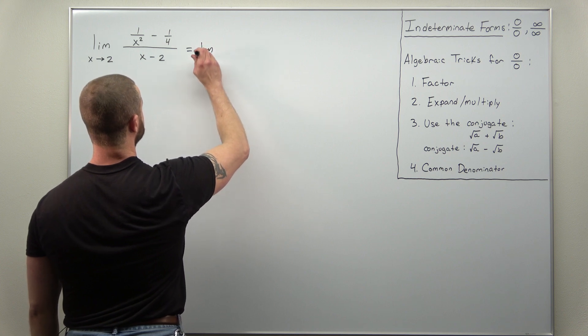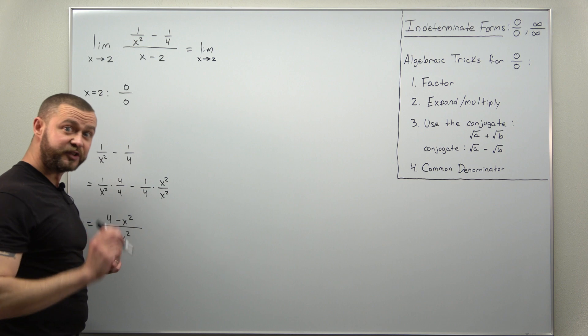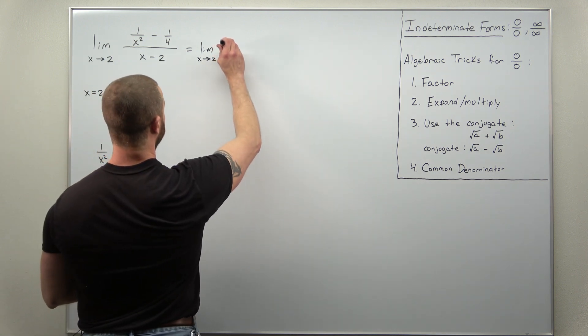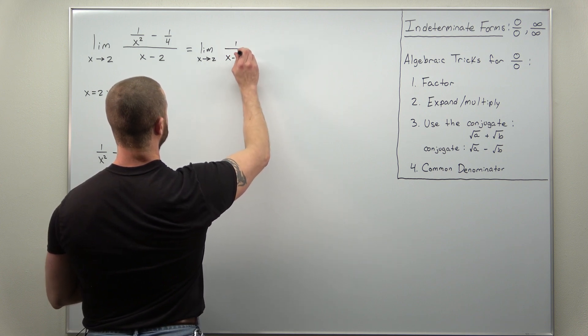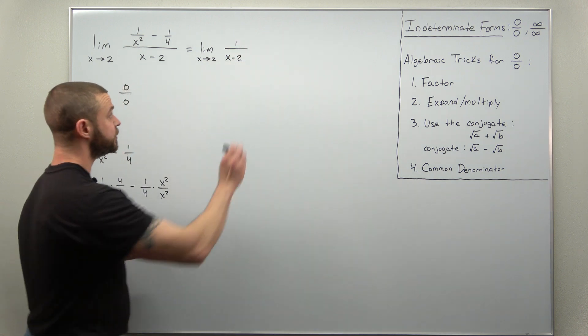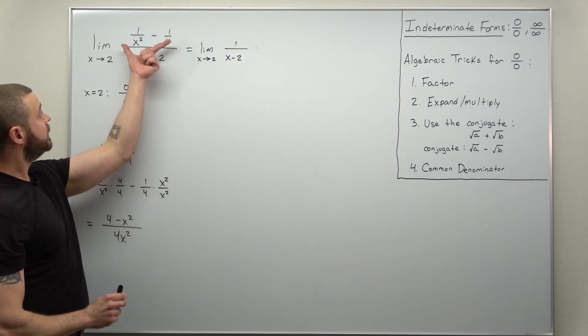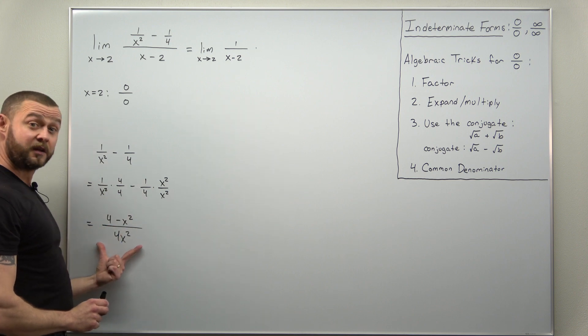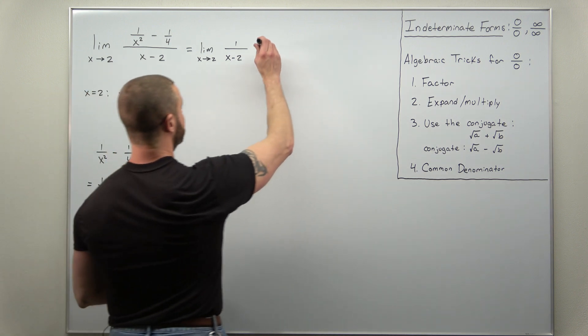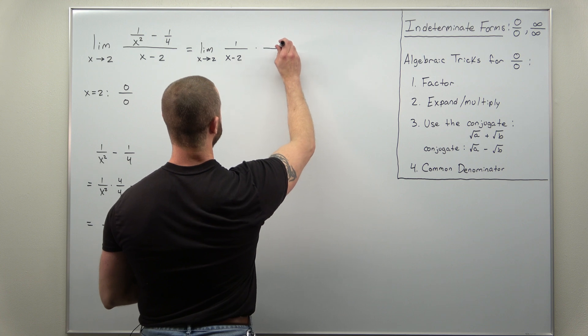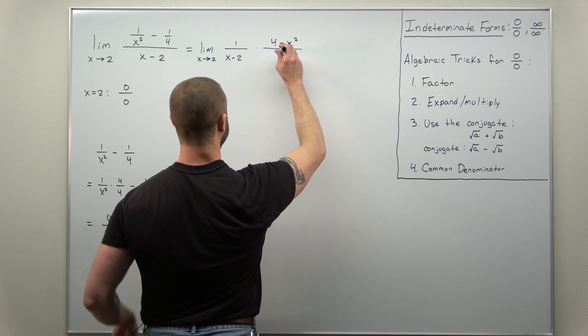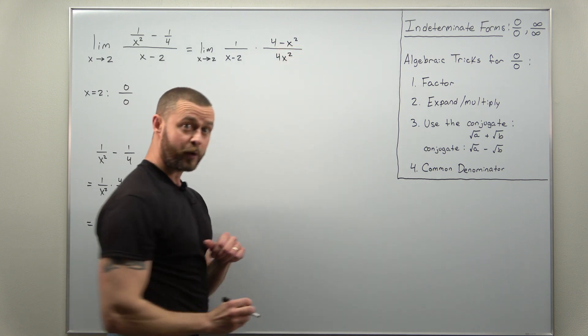So let's rewrite this. x is still approaching 2 for the limit, but instead of dividing by x minus 2, we're going to multiply by 1 over x minus 2. And what that's multiplying is here the numerator, which we simplify to this. It's still a fraction, but at least now we have no more fractions within fractions. So we simplify that to 4 minus x squared all over 4x squared.